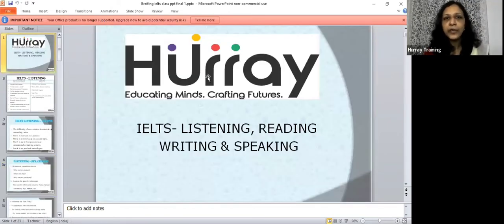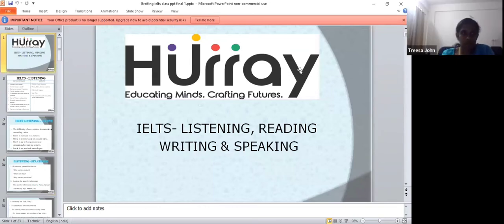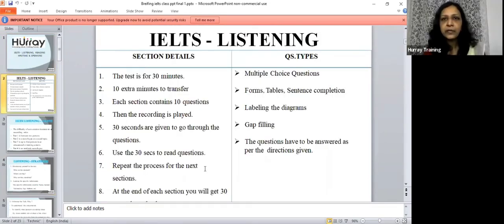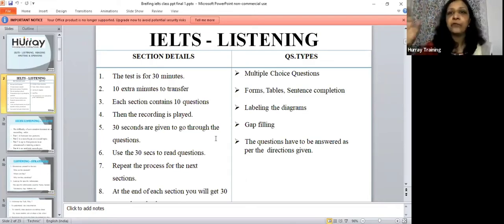So first is listening. So this is how the listening structure of the listening test is. You have four sections. Now they're called parts from last year, 2020 onwards, January. They change it and they call it part one, part two, part three, part four. So there are four parts, as you did in your listening, you saw that. Earlier they were called sections. Now they're called parts. There are four parts. Each part has 10 questions.